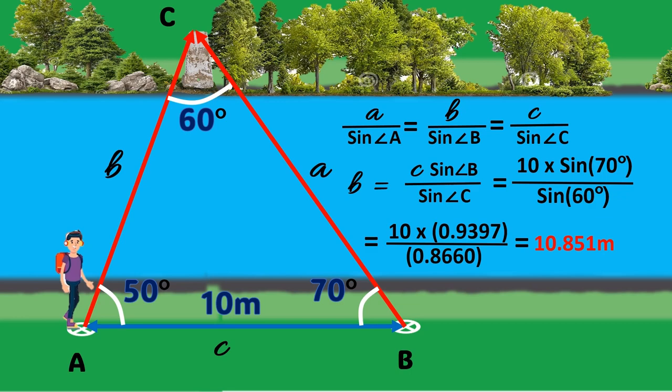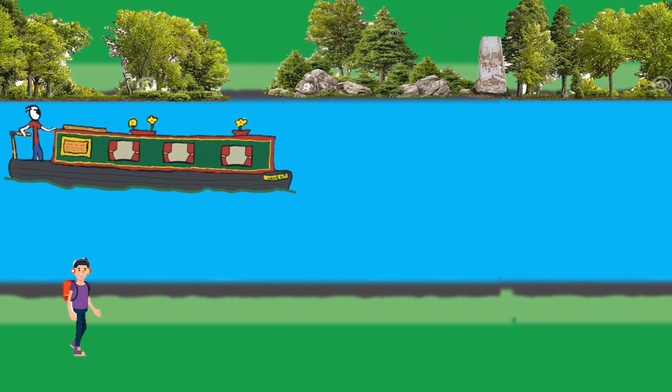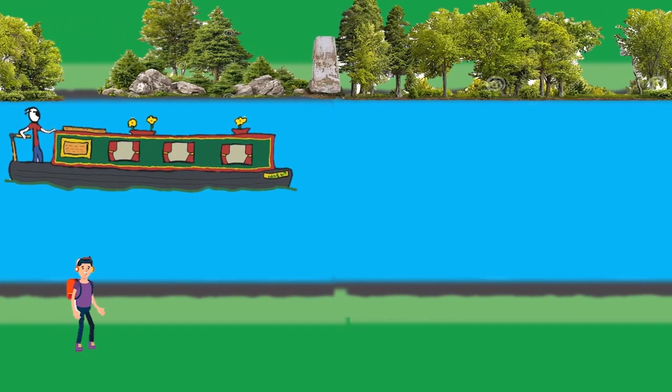With this formula, you can now find the distance to the rock from point B also. You are happy to find out that you were just about 10.8 meters away from a possible mermaid sighting, and you happily sing along, row row row your boat gently down the stream.